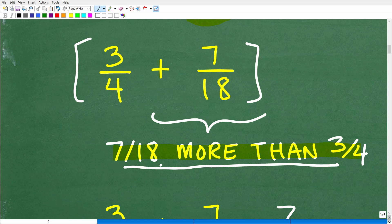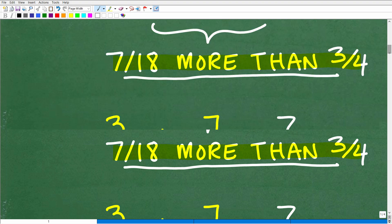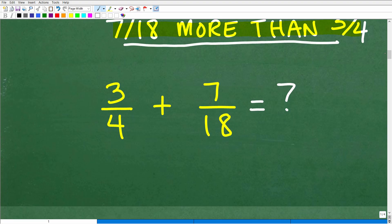And especially when you're dealing with differences, i.e. subtractions, the order, the way you write things, really does count. Because you've got to really be paying attention to the details. But this is 7/18 more than 3/4, 3/4 plus 7/18. So now the problem is this: 3/4 plus 7/18.